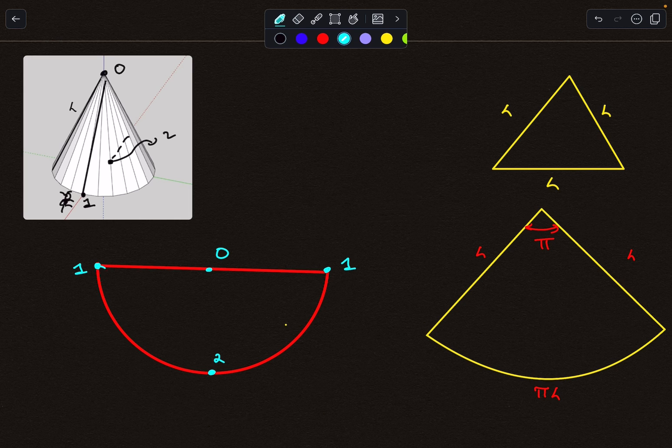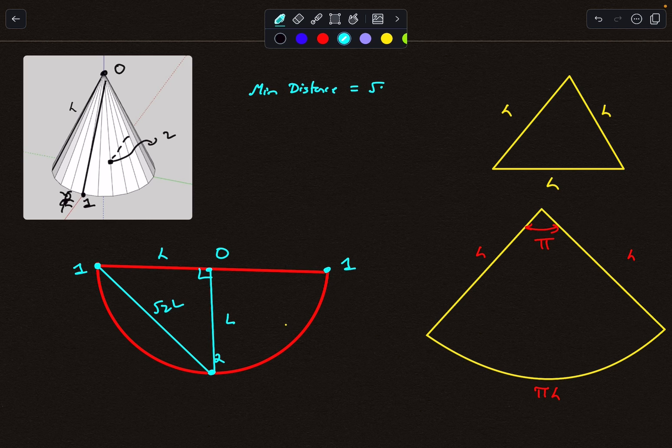So now we can clearly see that if the ant starts from here, the shortest distance that the ant has to cover is represented by the line from one to two. The radius of the circle is simply L, this is 90 degrees, which means the distance is √2L. So the minimum distance comes out to be √2L. So the minimum time taken by the ant comes out to be √2L divided by v. This would be the answer to the problem.